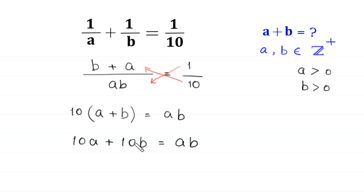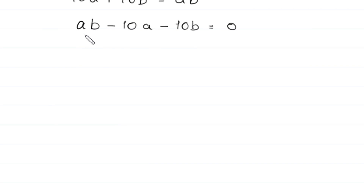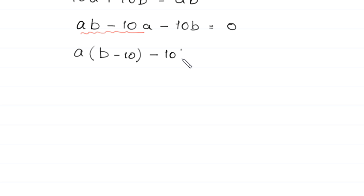We move the terms 10a and 10b to the right-hand side. The equation becomes ab minus 10a minus 10b equals 0. From the terms ab minus 10a, we can factor out a, giving a times (b minus 10) minus 10b equals 0. Now, if we multiply 10 by 10 we get 100.